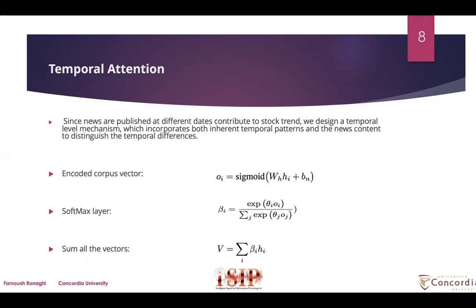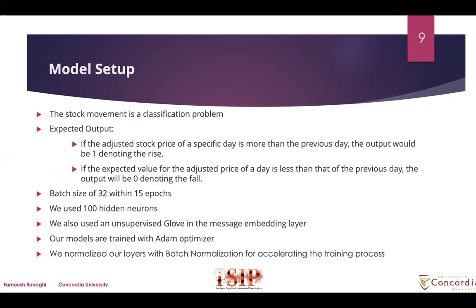This completes the presentation of the proposed ND-SMPF fusion framework. Stock movement is a classification problem. If the adjusted stock price of a specific day is more than that of the previous day, the output is 1, denoting a rise. If the adjusted price of a day is less than that of the previous day, the output is 0, denoting a fall. We use a batch size of 32 within 15 epochs.